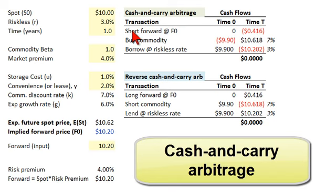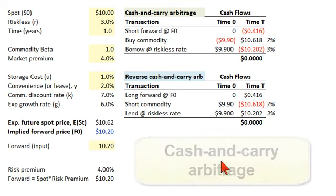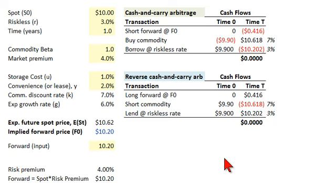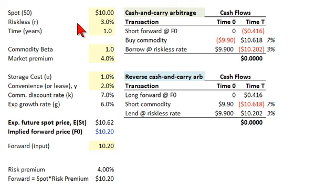Hello, this is David Bionic Turtle. I thought I'd look at cash and carry and reverse cash and carry arbitrage. These are the no-arbitrage ideas that tell us the forward price ought to find an equilibrium. I'm going to combine some of the building blocks that I've already reviewed in previous tutorials relating to the commodity futures curve. This is in regard to a hypothetical consumption commodity as opposed to an investment commodity.